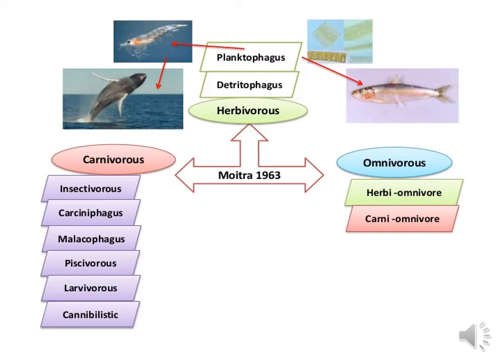Insectivorous fishes are those which commonly feed on insects, like rainbow fishes. Carcinophagus includes crab-eater fish species, also called lobe-toothed because their lobe teeth are adapted to filtering small crustacean prey. Malacophagus fishes belong to the Cichlidae family. Piscivorous fishes are defined as carnivorous fishes that consume large fish as prey. Larvivorous fishes feed on insect larvae, such as freshwater gambusia. Cannibalistic behavior is also observed in different fishes — cannibalism refers to the action of attacking and consuming members of one's own species, such as juvenile cannibalism in Asian sea bass.